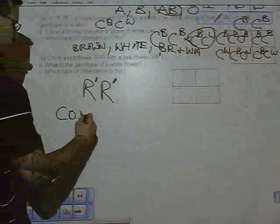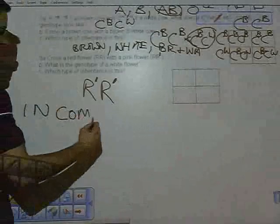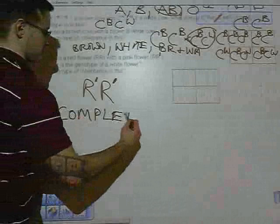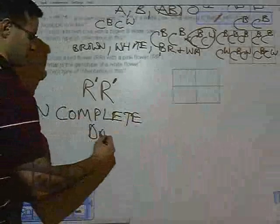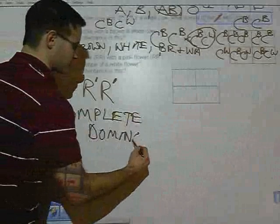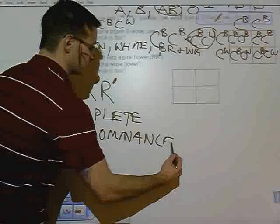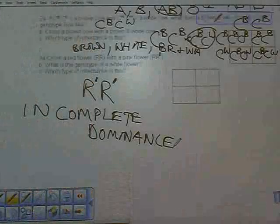So what type of inheritance is this? Again, this is incomplete dominance. So in both cases for co-dominant and incomplete dominance, there is no true dominant or recessive genotype or phenotype.